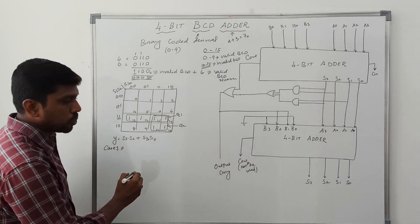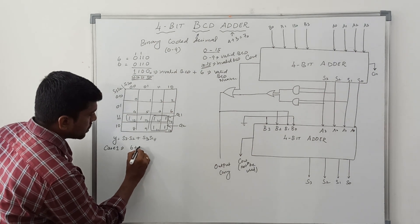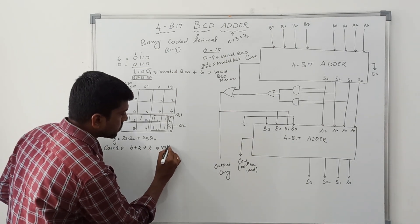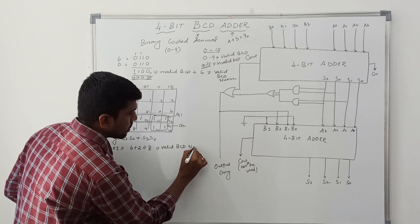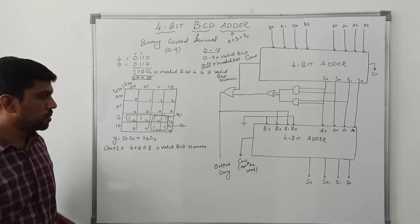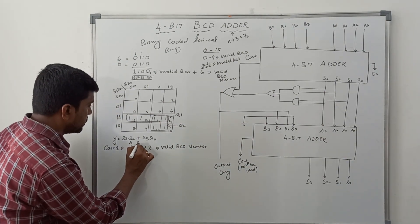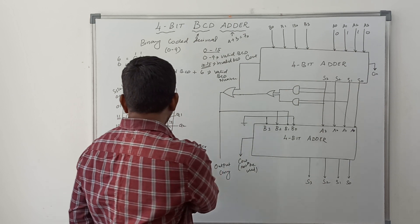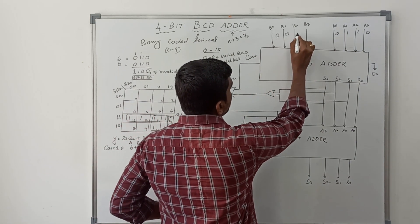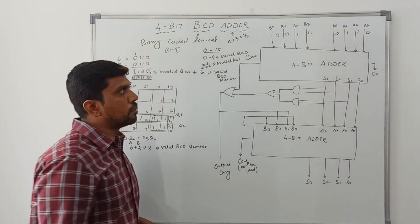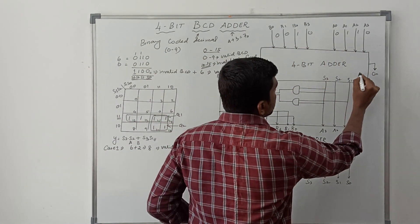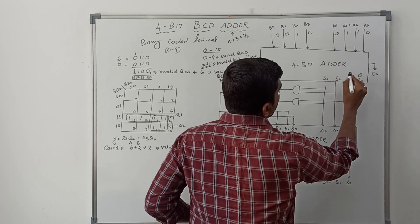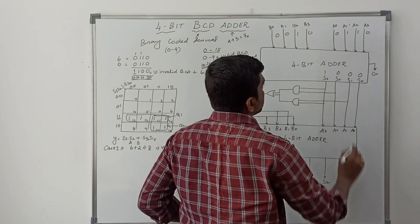Case 1: adding 6 plus 2 gives 8, which is a valid BCD number, so we do not add 6 to the sum. A = 6 (binary 0110), B = 2 (binary 0010). Adding: 0+0=0, 1+1=0 carry 1, 1+0+1=0 carry 1, 0+0+1=1. The sum output S3=1, S2=0, S1=0, S0=0, which is 1000 (decimal 8).